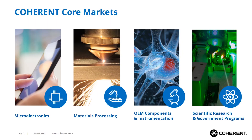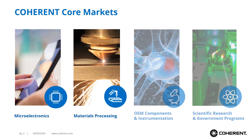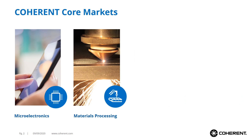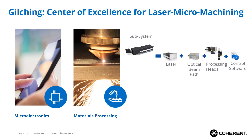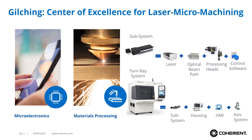First let me introduce you to Coherent. Coherent is a laser company working on four core markets: microelectronics, material processing, instrumentation, and research. This presentation will address the first two of these. Coherent Munich, located in Gilching, offers subsystems as well as complete turnkey systems for laser micromachining.